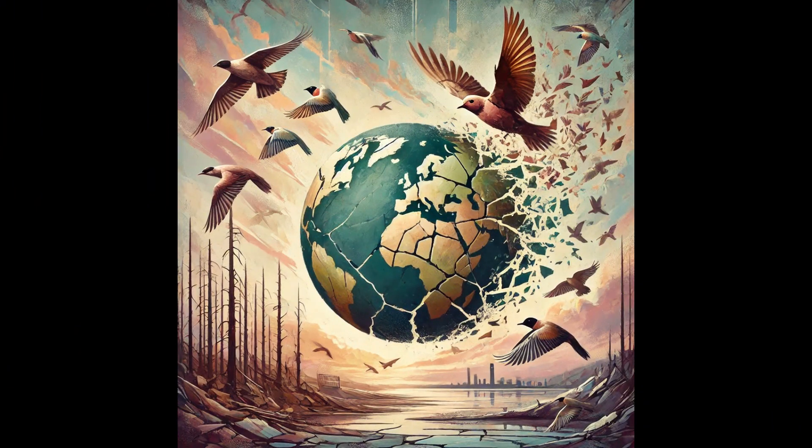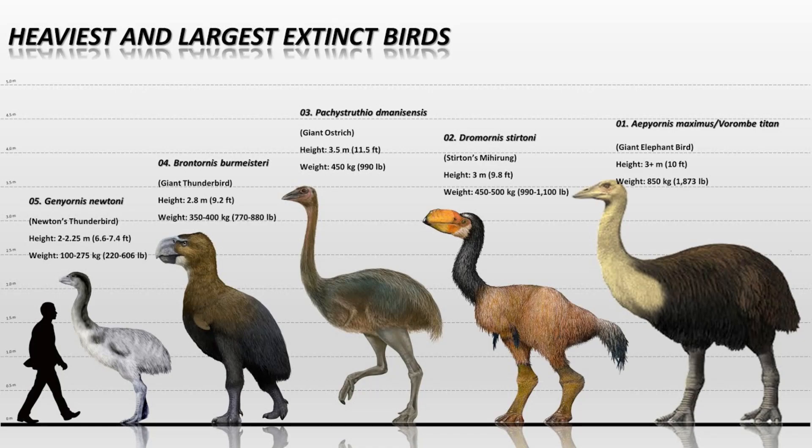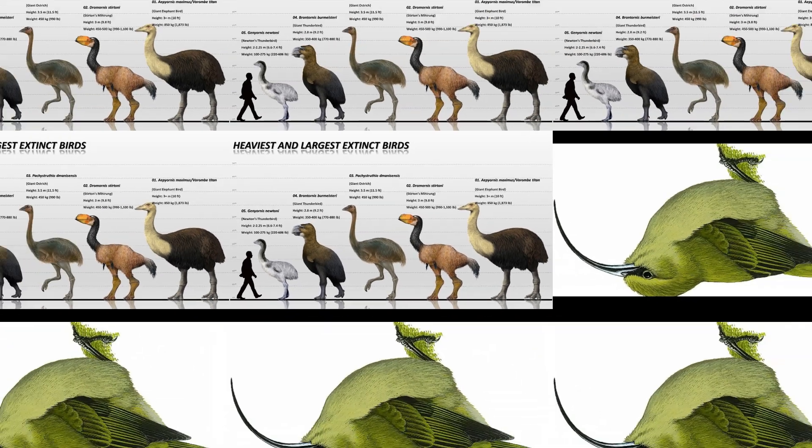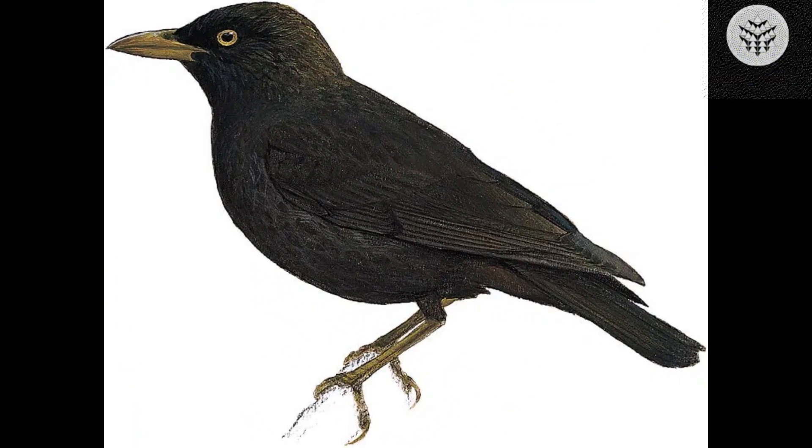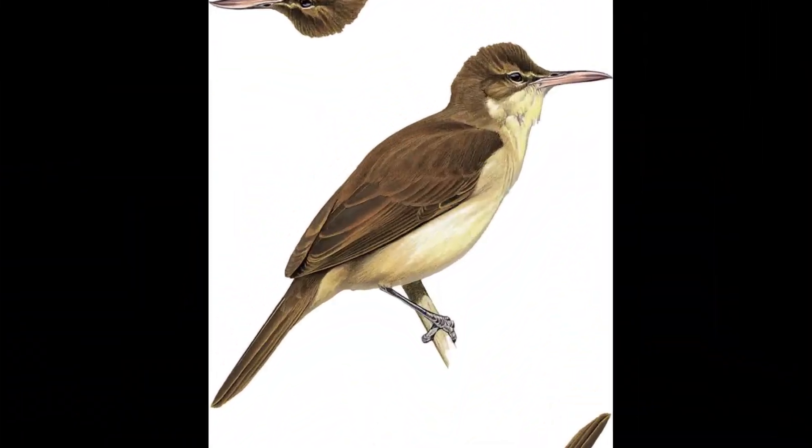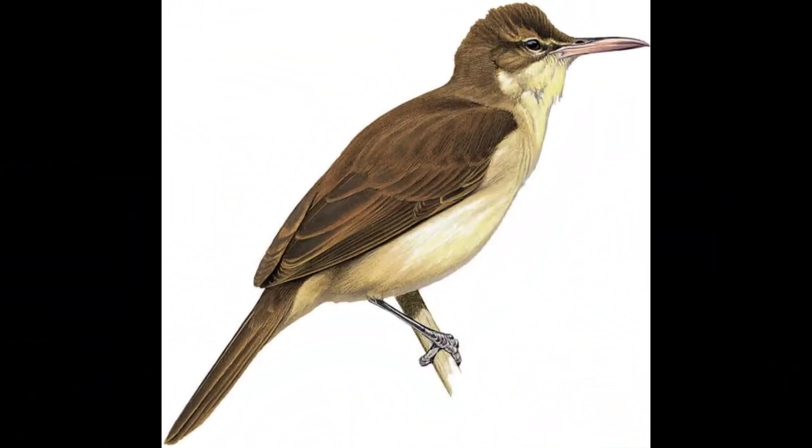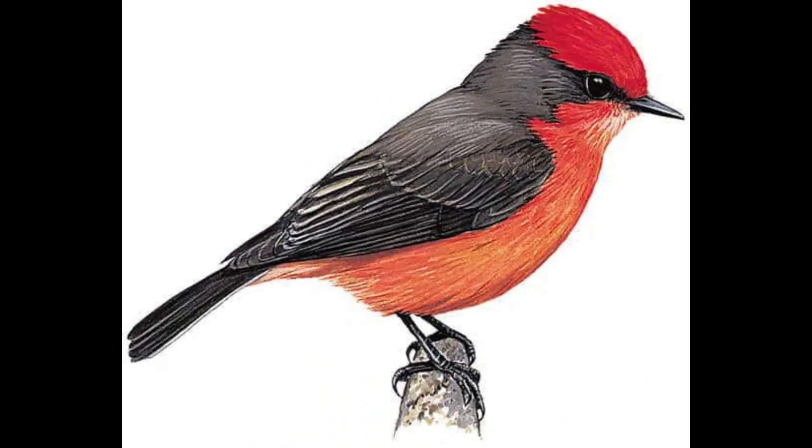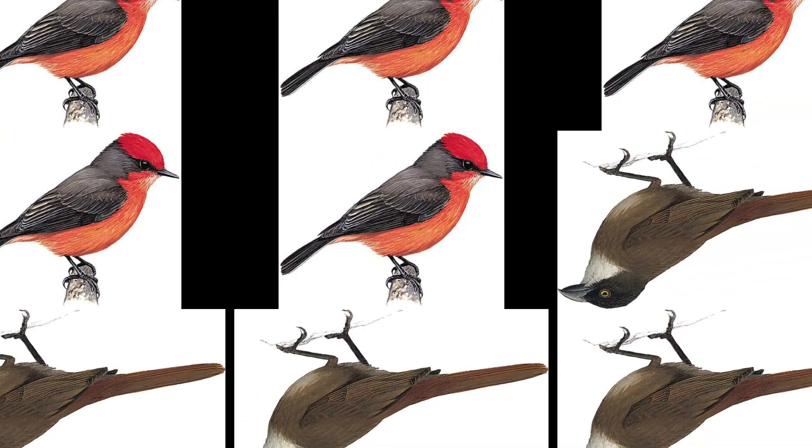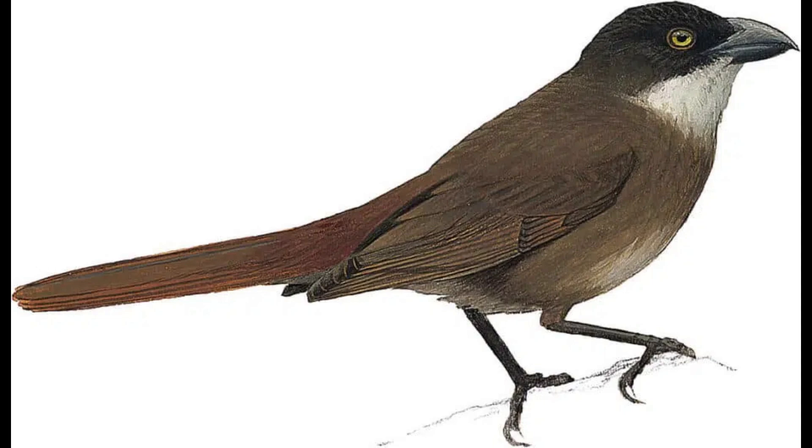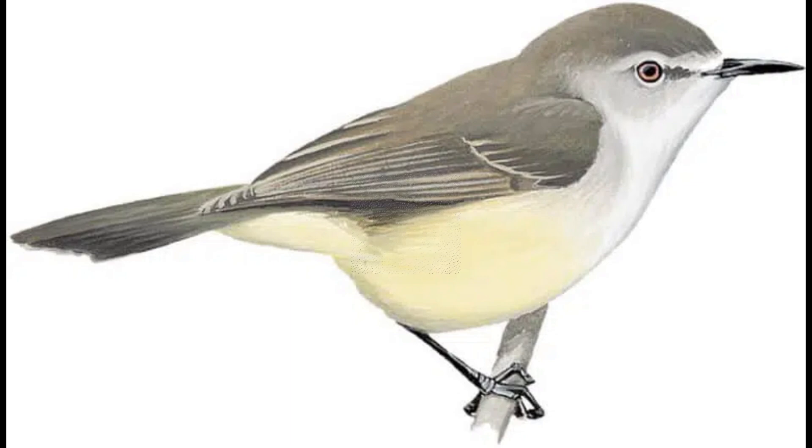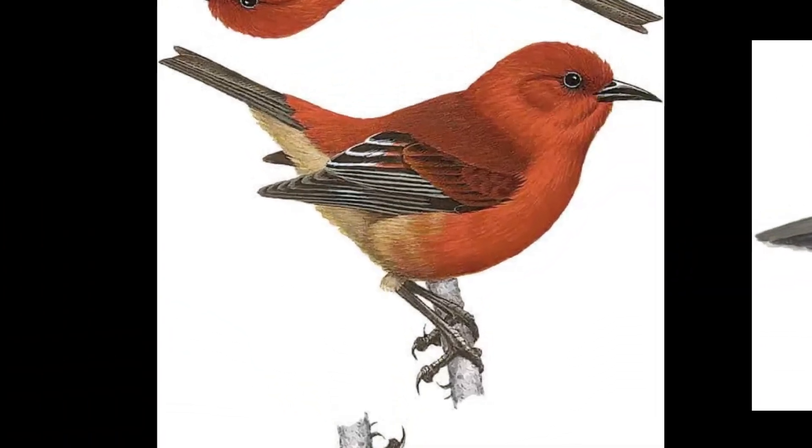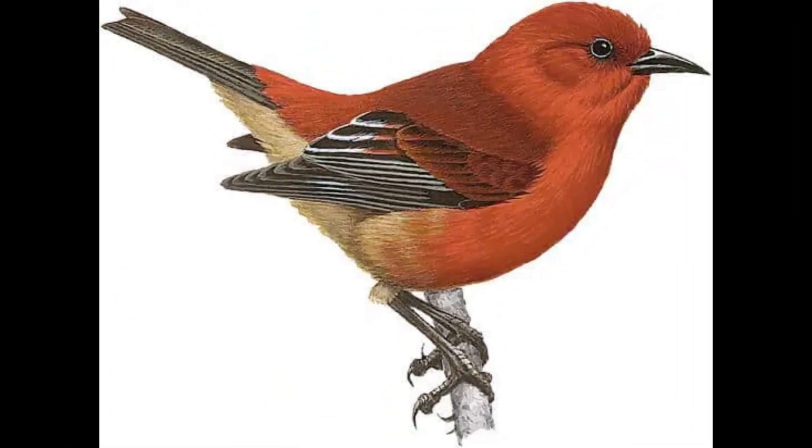Considering the crucial ecological functions that birds fulfill, the decline in avian functional diversity is poised to have extensive repercussions. The aftereffects of these extinctions encompass diminished pollination of flowers, decreased seed dispersal, and the disruption of top-down regulation of insect populations, which includes numerous pests and disease carriers. Furthermore, there is an increase in disease outbreaks attributed to the lower consumption of carrion.